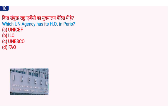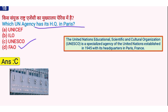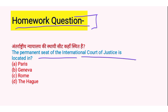Which UN agency has its headquarters in Paris? The right answer is option C, UNESCO — the United Nations Educational, Scientific and Cultural Organization. UNESCO is a specialized agency of the United Nations established in 1945, with its headquarters in Paris, France. Now, your question for the comment section: the permanent seat of the International Court of Justice is located at which place?